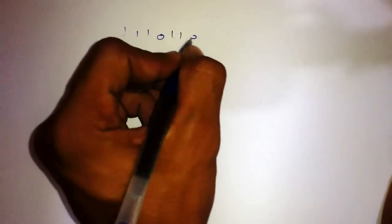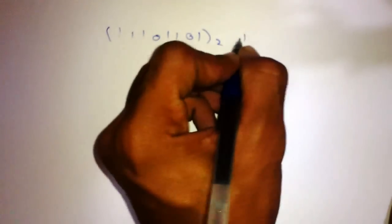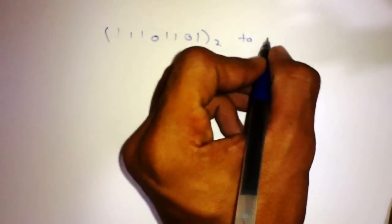Let's write a binary number: 11101101. We will convert this binary number to an octal number.